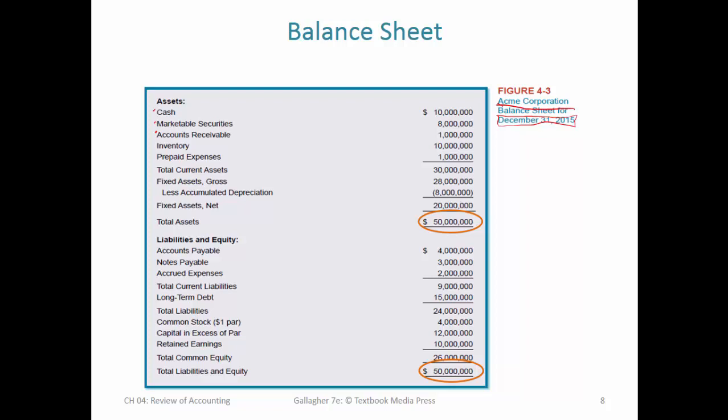Accounts receivable we might not collect for 30, 60, or 90 days, but they'll still turn into cash pretty soon. Inventory we could theoretically sell off in the near term — in normal operations we're going to sell some, but if needed we could sell to competitors or liquidate by marking things down. Prepaid expenses are money we've paid for services not yet received, such as insurance premiums that last all year or multiple years — listed as an asset because it's something of value coming to us. We add up current assets and then look at long-term assets: fixed assets such as equipment, plant, buildings, land. Subtracting accumulated depreciation gives us net fixed assets, and current plus fixed gives us the total.